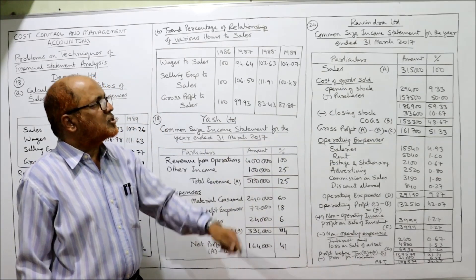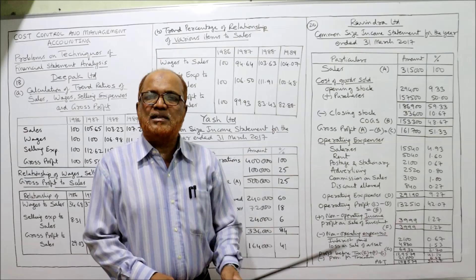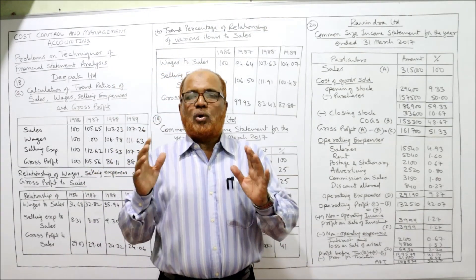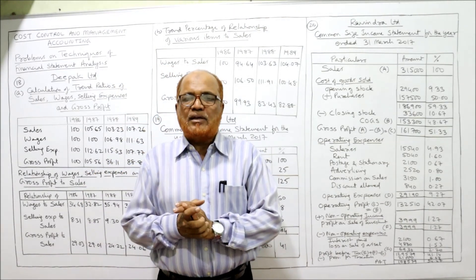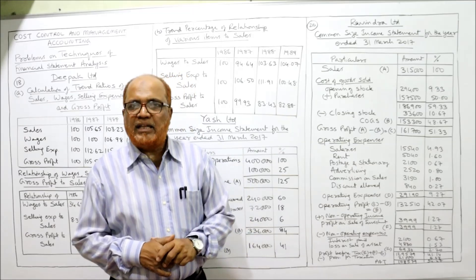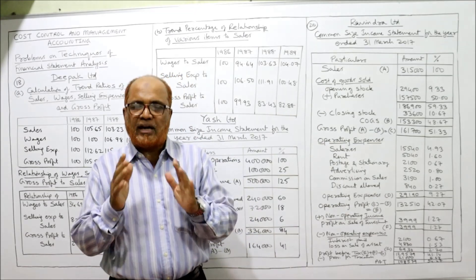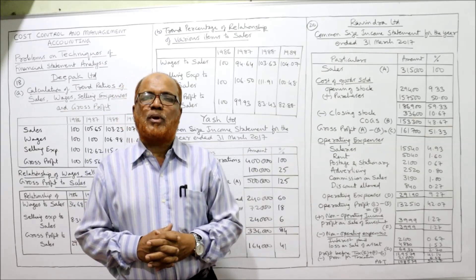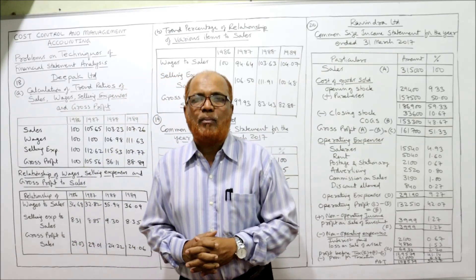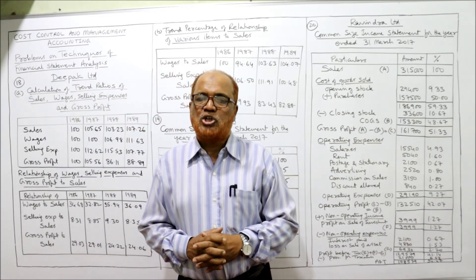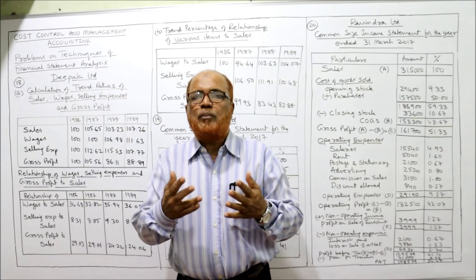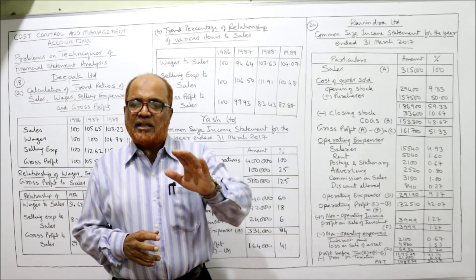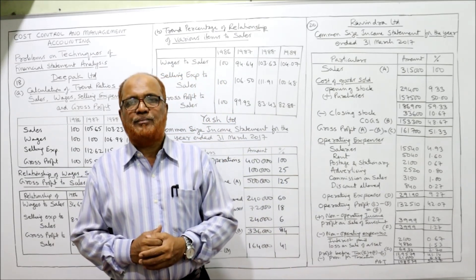This is called the common size income statement. In this video, I have explained problem number 18 on trend percentage, and problems 19 and 20 on common size income statement. There are a few more problems on common size statements, which will be done in the next video.